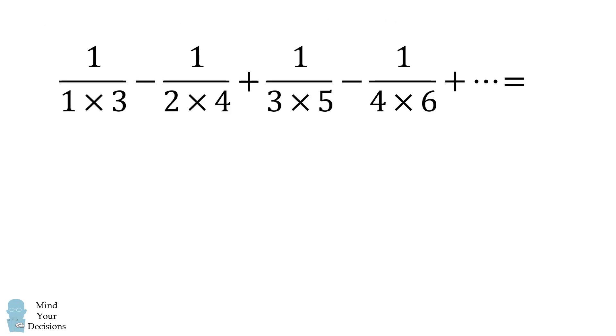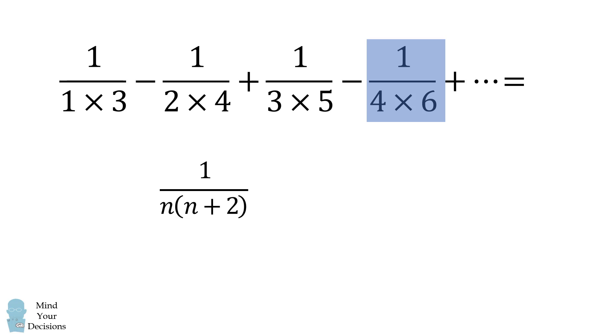To evaluate this sum, we will first notice a pattern in each of the terms. Each of the terms has the form of 1 divided by n multiplied by n plus 2. We will further simplify this fraction into its partial fraction decomposition. This fraction will be equal to some number divided by n plus another number divided by n plus 2. We need to solve for the values of a and b.